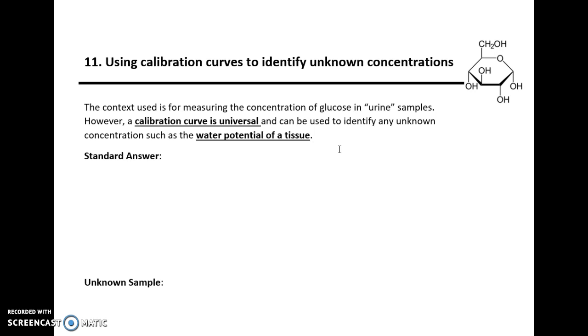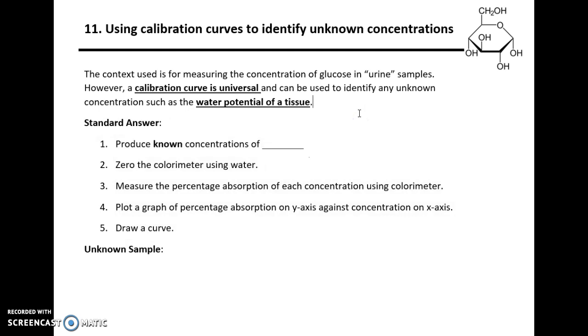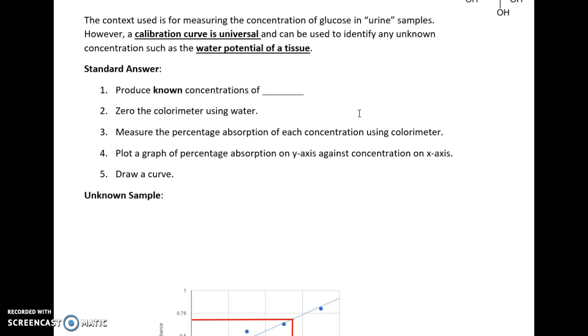So the standard answer you give for explain how to produce a calibration curve, how to use a calibration curve to identify an unknown concentration, is to first of all produce known concentrations. So you need to have known concentrations of certain things. So if we use the context of glucose, you need to know the concentration of glucose in those tubes. So you might need to produce them, and if they ask you to suggest how to produce these, well, that would involve the use of dilution. So you need to dilute the stock solution with X centimeters cubed of water to produce whatever dilution is needed. So number one, produce known concentrations of whatever.